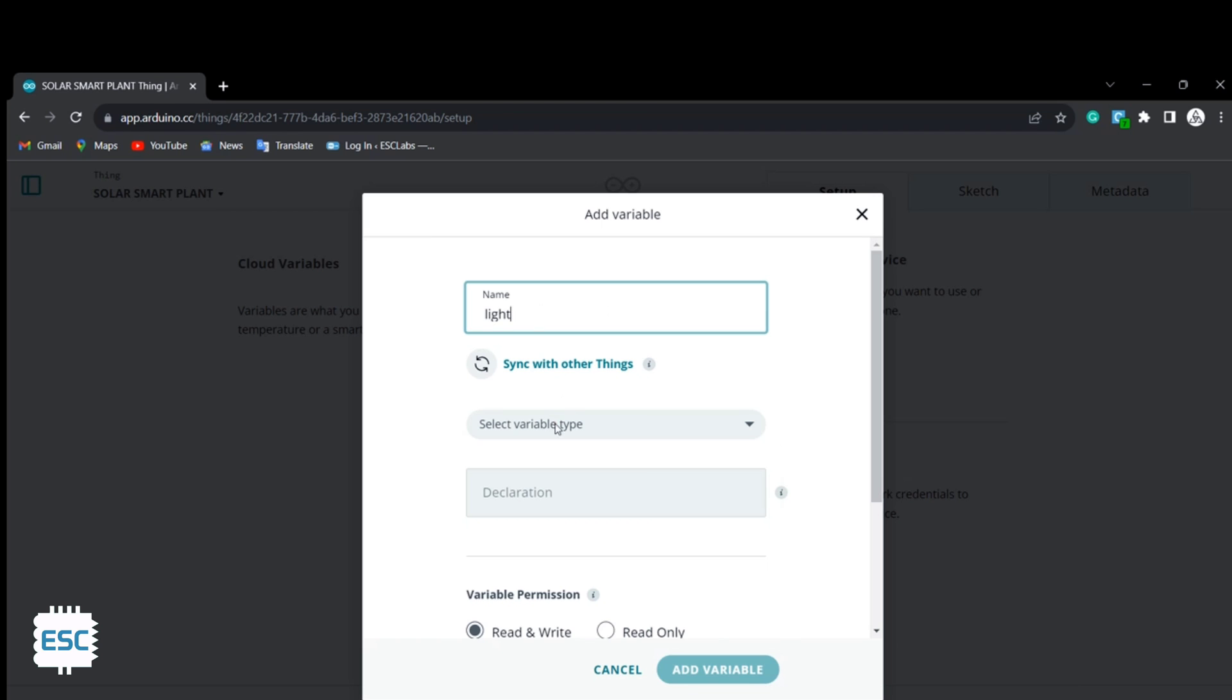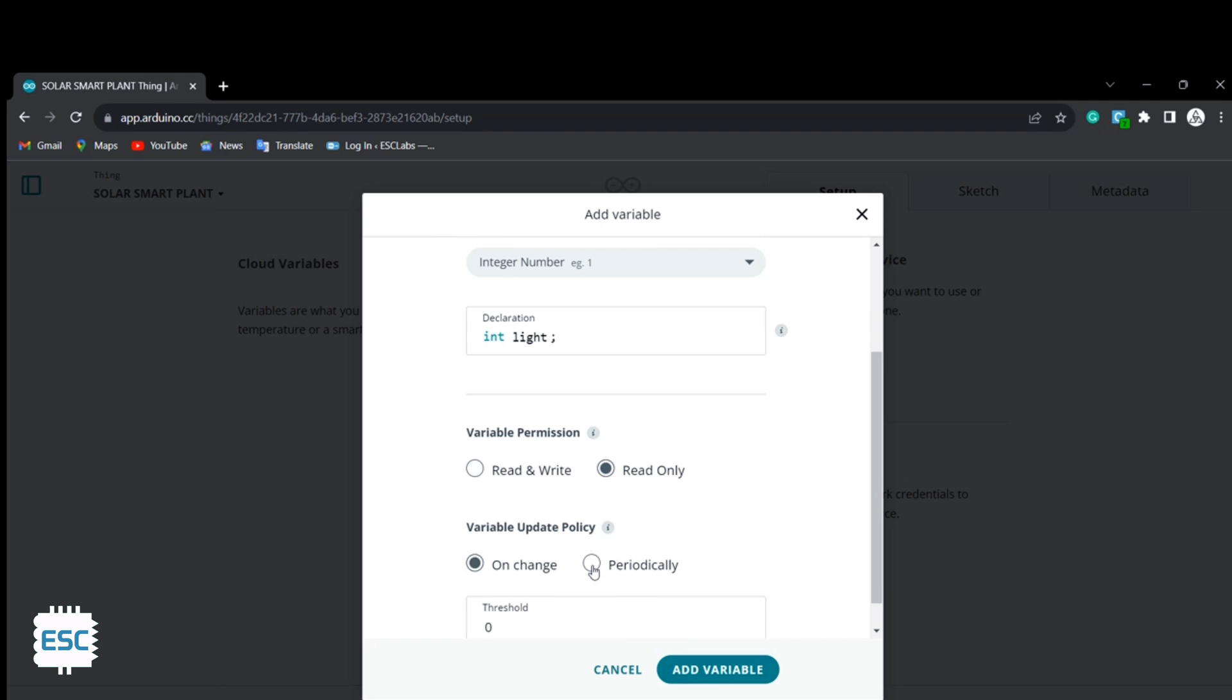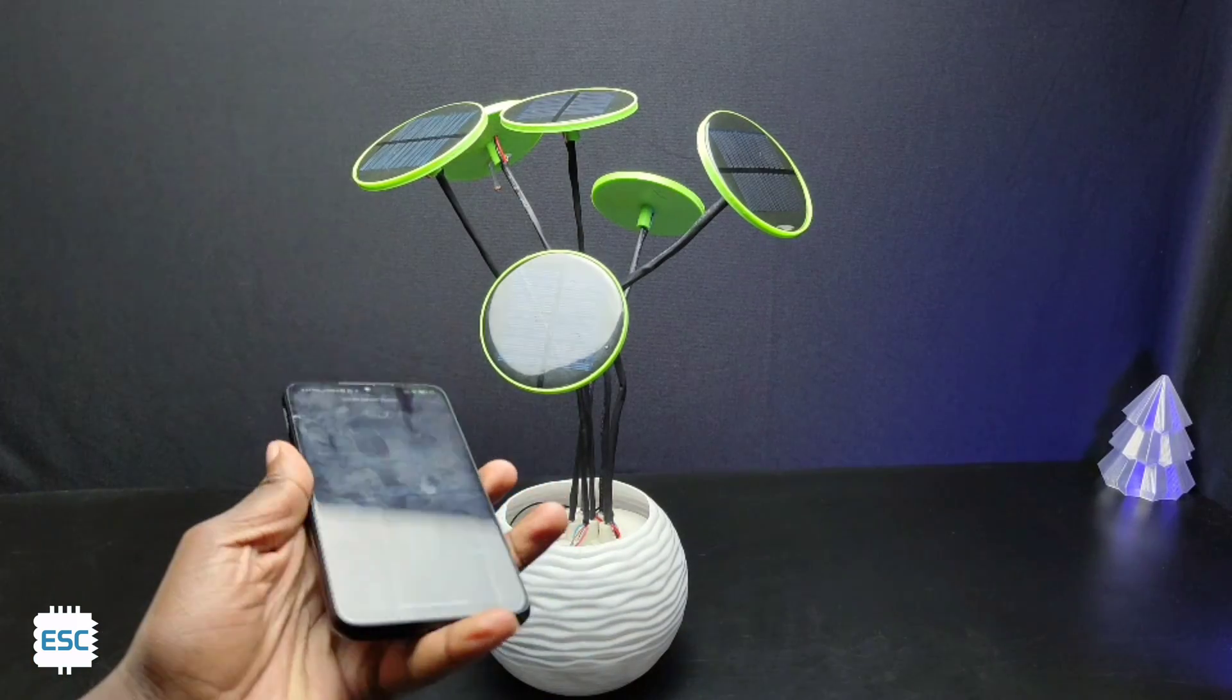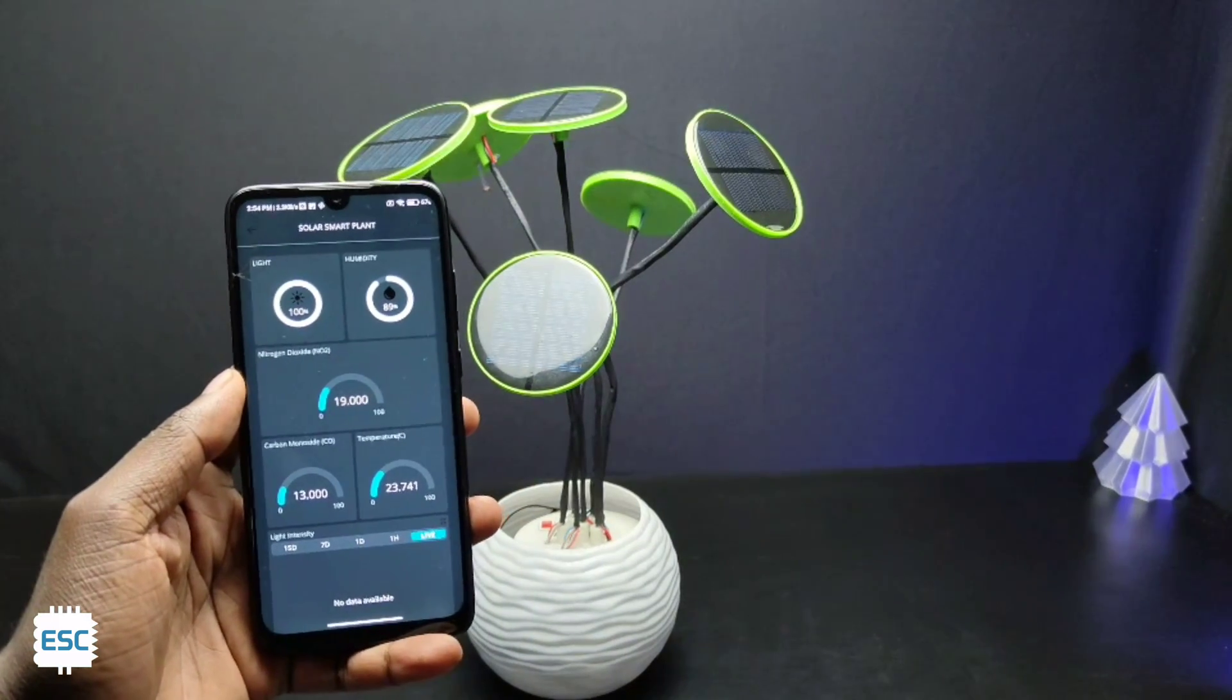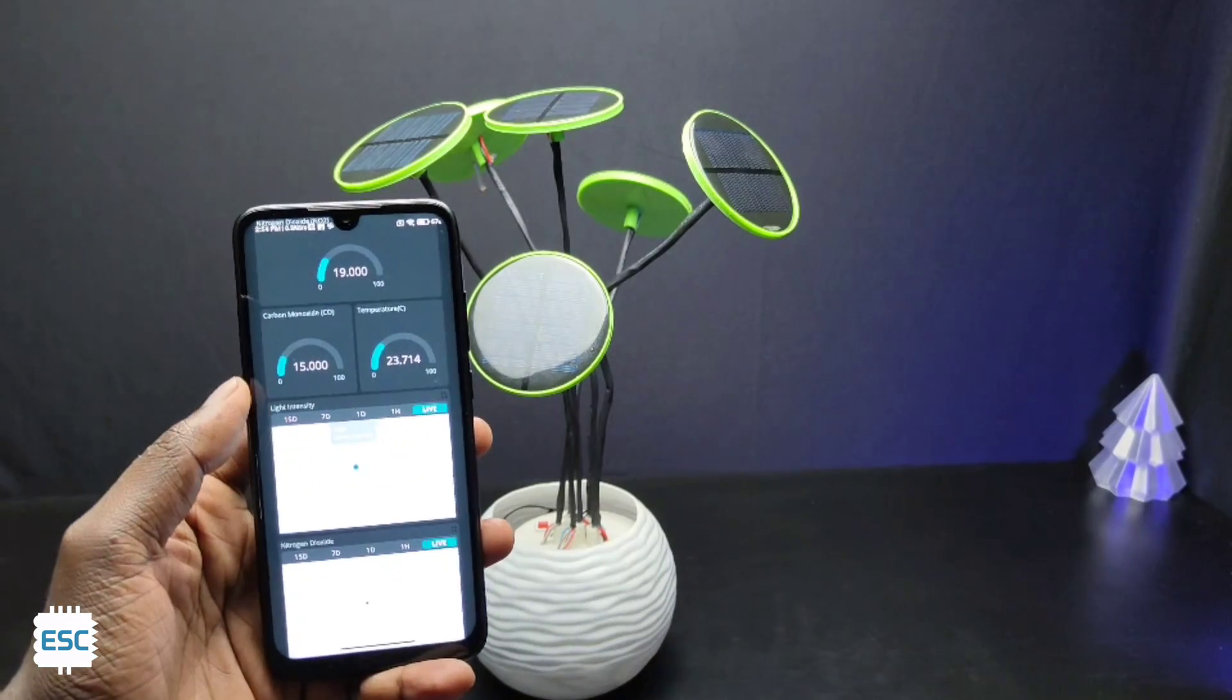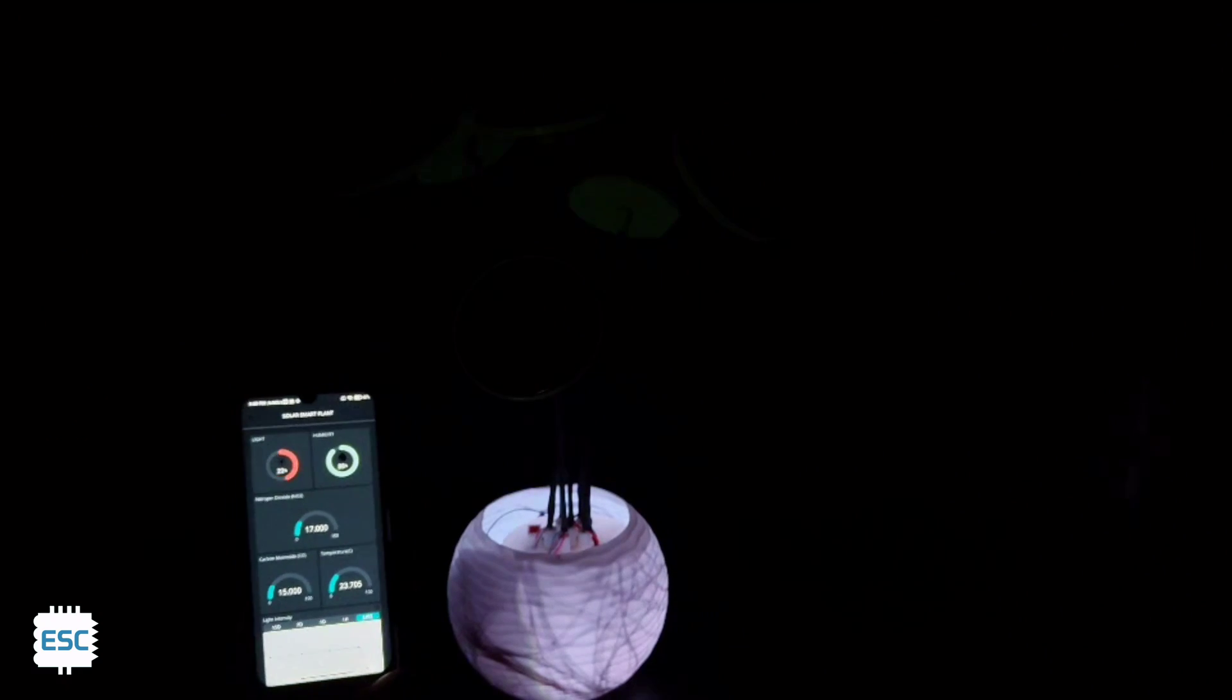I have explained all the programming in the article section. So you can check and download the code and other files from there. After uploading the code to the ESP32, we can test the working of our plant. Now you can see the readings of carbon monoxide, nitrogen dioxide, temperature and light intensity on Arduino IoT app. Also you can see that the white light is automatically turned on when the surroundings go dark.